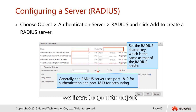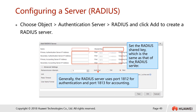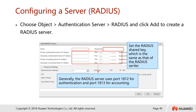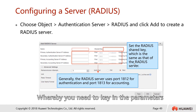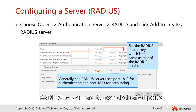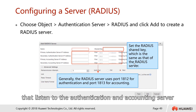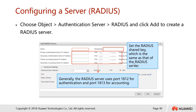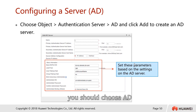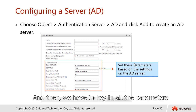To create a RADIUS server template in the Huawei firewall, go to Object, then on the left side choose Authentication Server, go to RADIUS, and click Add. Enter the parameters found in the RADIUS server, including the dedicated ports for authentication and accounting. For AD configuration, go to Object, Authentication Server, and choose AD, then enter all the AD server parameters.